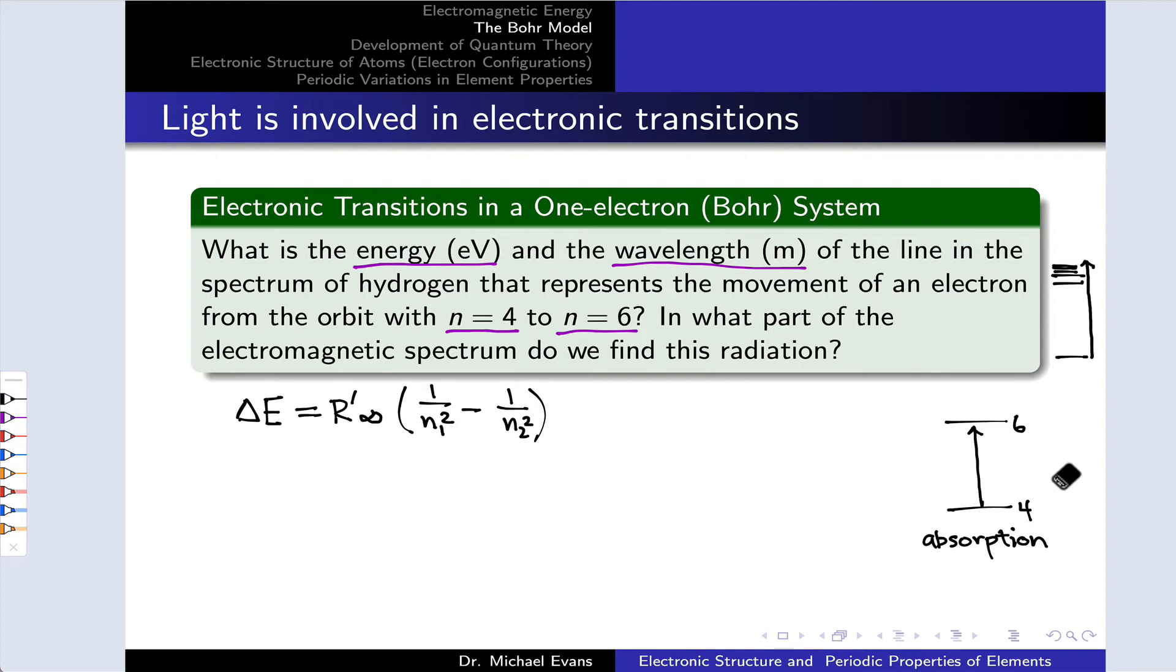In this particular problem, n1 is 4 and n2 is 6. This is going to guarantee that our delta E is positive, since we can write that out to 1/16th minus 1/36th. That's going to be a positive number; 1/16th is greater than 1/36th last I checked. The last thing we need to calculate this energy difference is the value of the Rydberg constant, which in joules is 2.18 times 10 to the negative 18 joules.